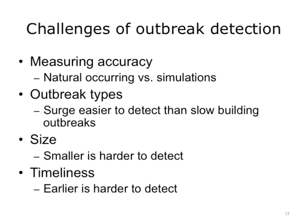There are several challenges to detecting outbreaks. The accuracy of a surveillance system is how well it can detect outbreaks when they occur with a minimal number of false alarms. Accuracy can be measured during an actual outbreak, though this may be too late or too rare. As an alternative, statisticians can create simulations of outbreaks in the data to measure accuracy. Surge outbreaks — when many people present with symptoms all at once — are easier to detect than slower-building outbreaks. Smaller outbreaks are harder to detect than larger ones.